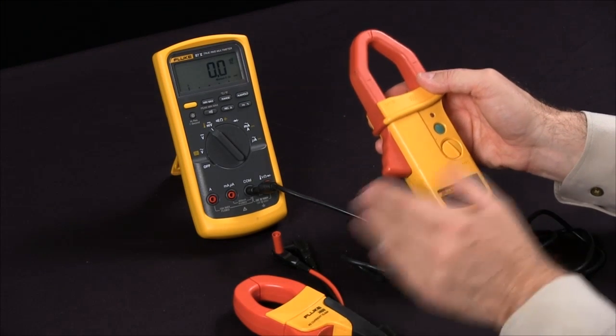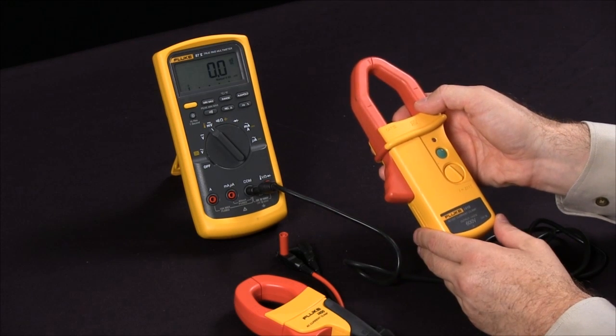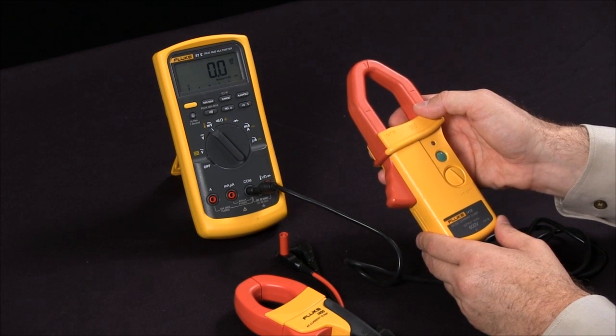At Fluke we have the AC and AC/DC current clamps, just one of the many ways you can extend the capabilities of your digital multimeter.